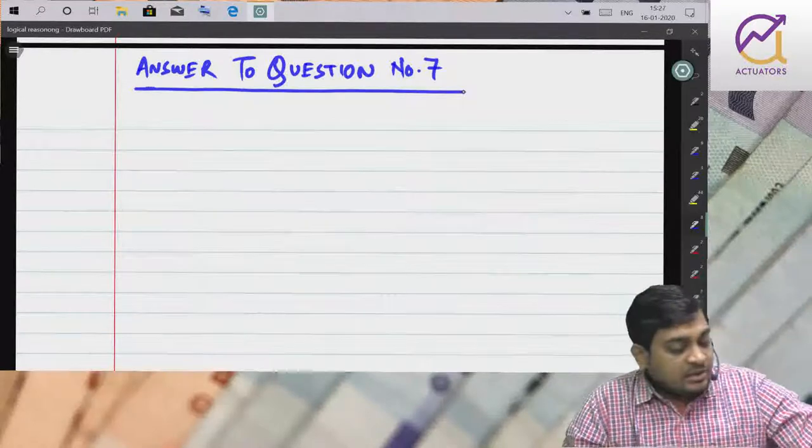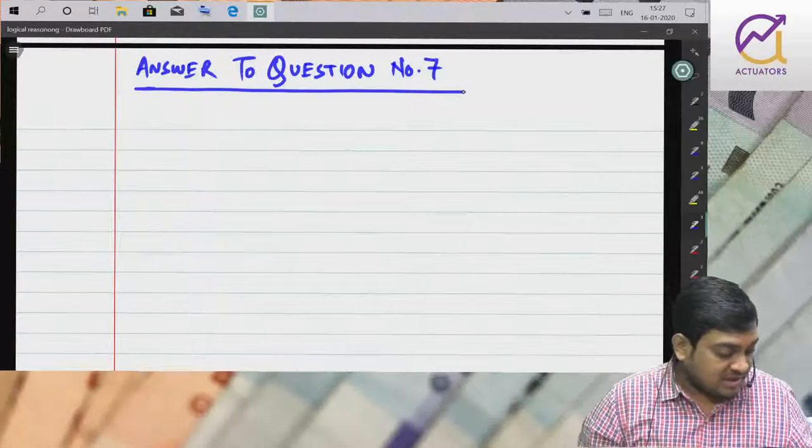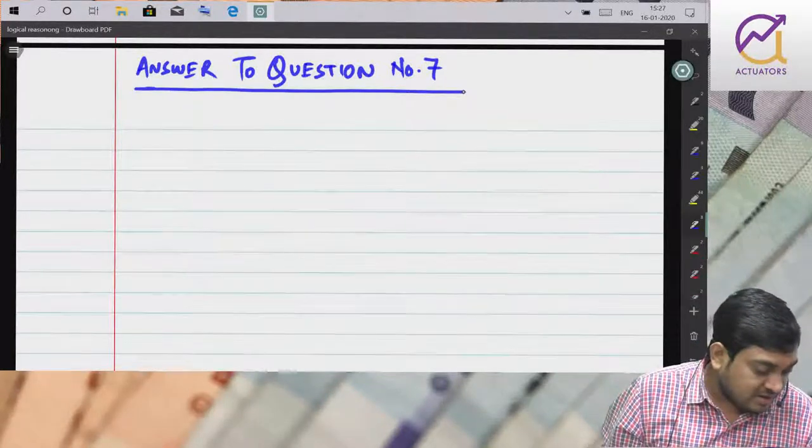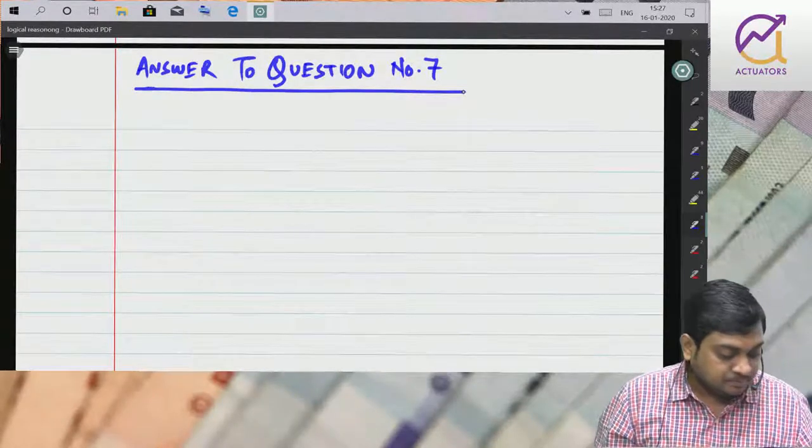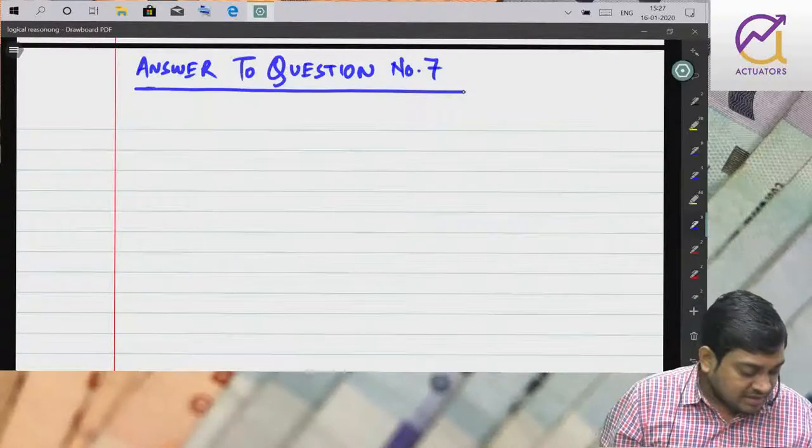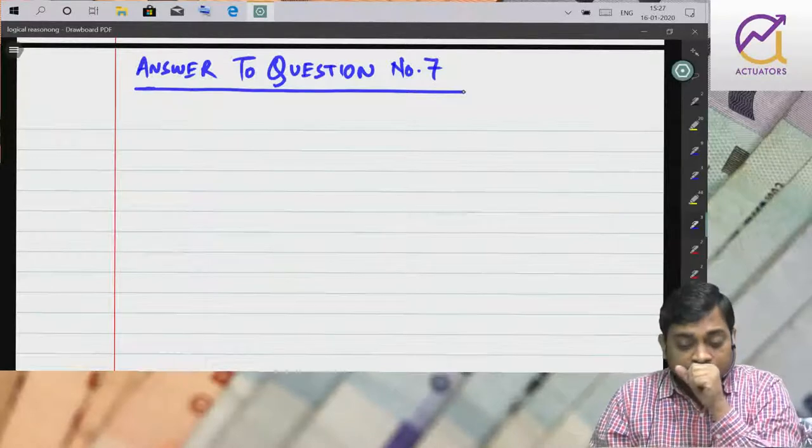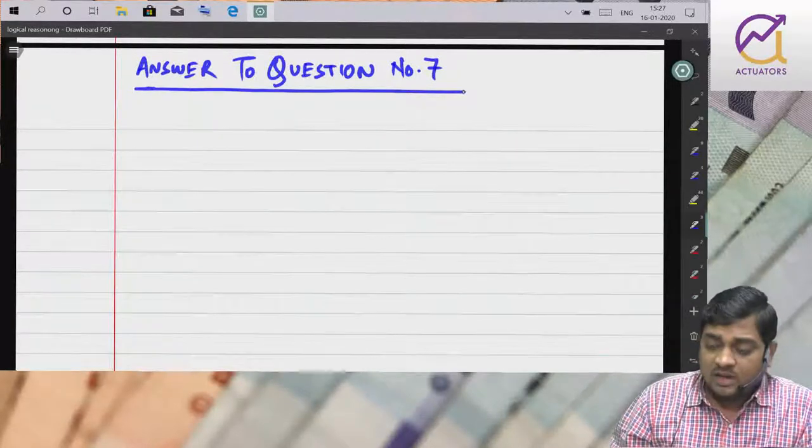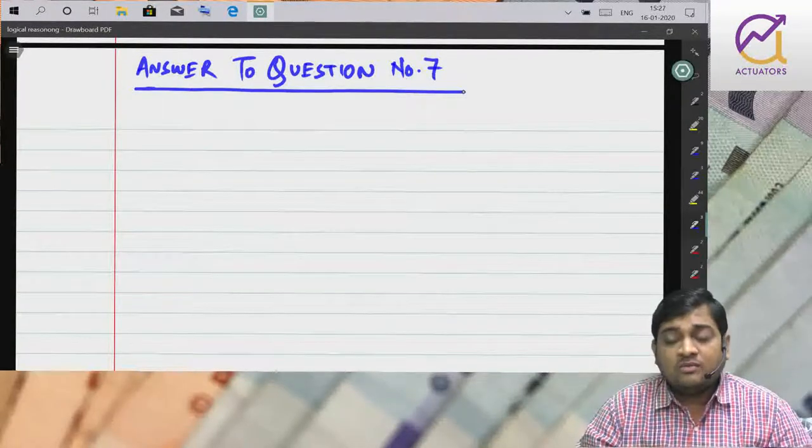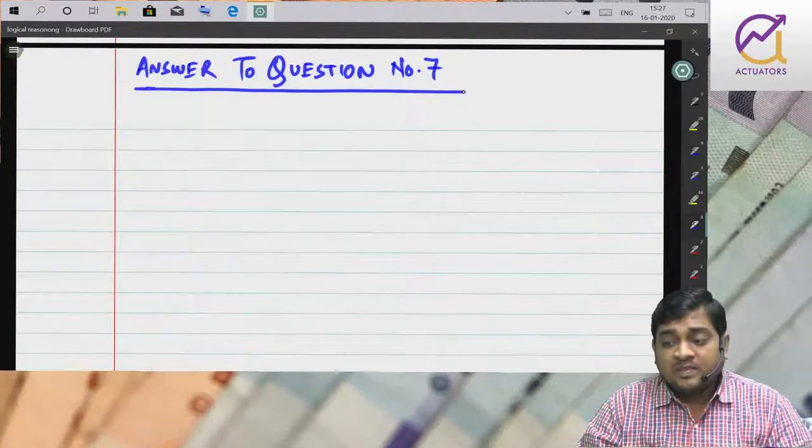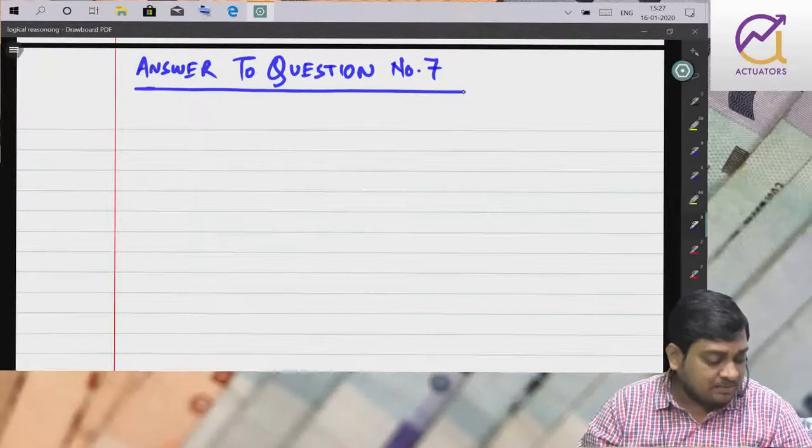So we were solving the revision test paper. We will do now question number 7. Everyone read it. You have to calculate overhead recovery percentage on the basis of different items like wages, factory overhead wages, selling and distribution overhead, administrative overhead, cost of production.